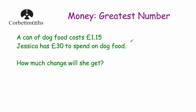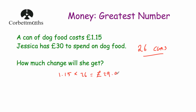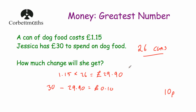She can buy 26 cans of dog food. The cost of each can is £1.15, so 26 × £1.15 = £29.90. She had £30 to begin with, so her change is £30 − £29.90 = 10p. The answer to how much change she'll receive is 10p.